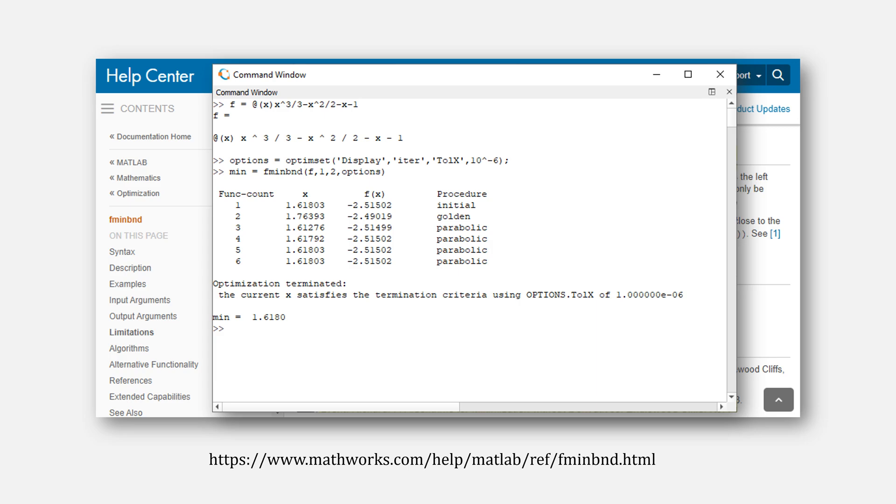If you look at an example, plugging in our solution from earlier, you can see it doing this initial step, then a golden section search, followed by parabolic interpolation until it terminates.